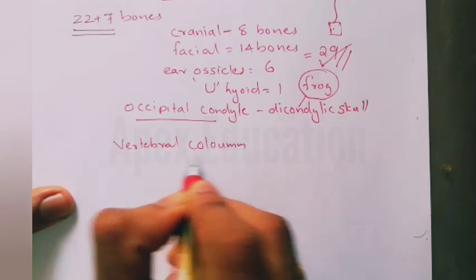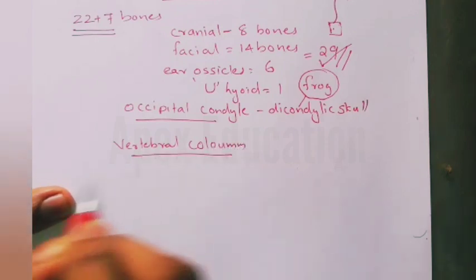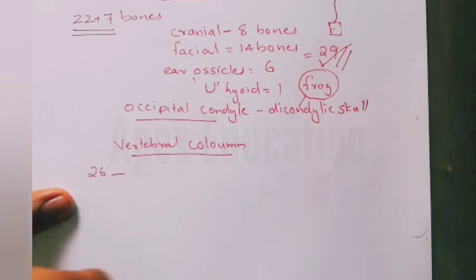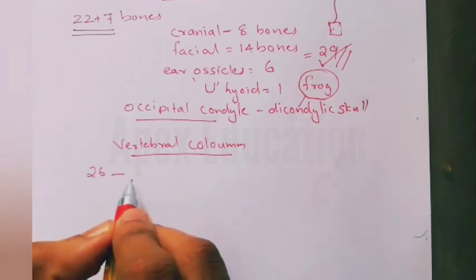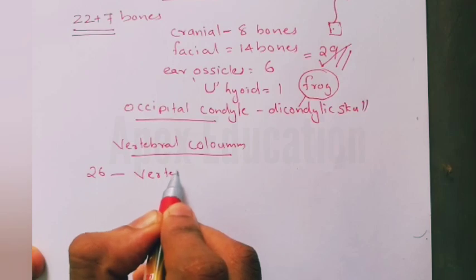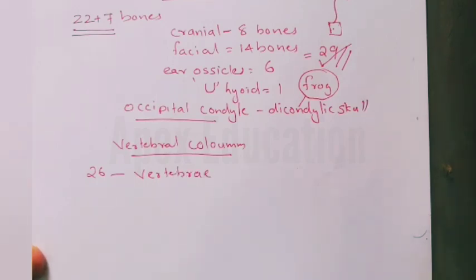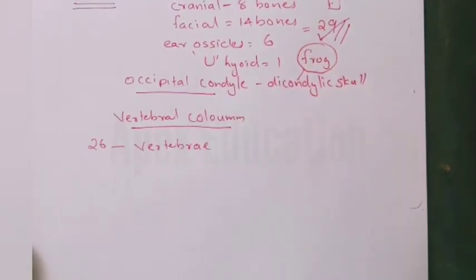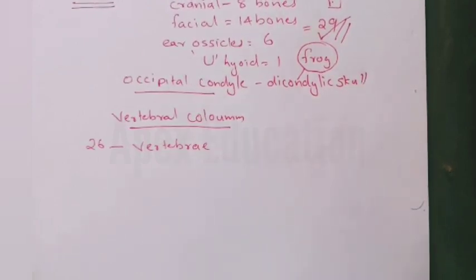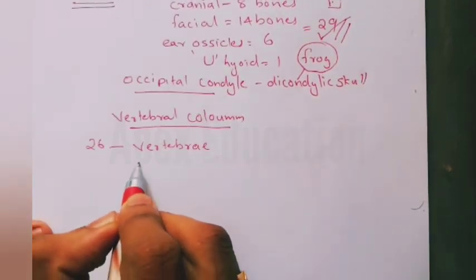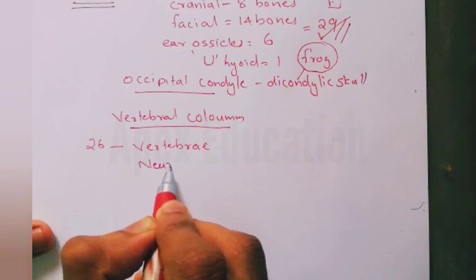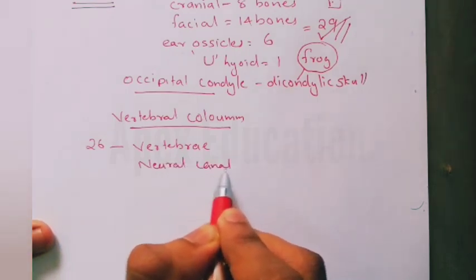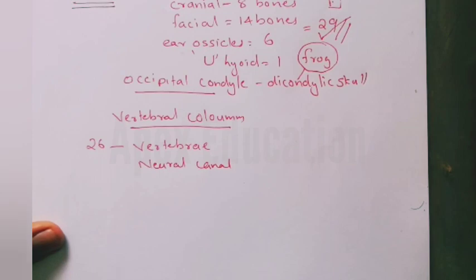The vertebral column consists of 26 serially arranged units called vertebrae. Each vertebra has a central canal called the neural canal, through which the spinal cord passes.